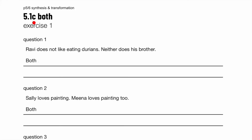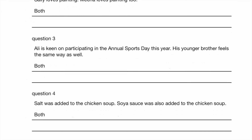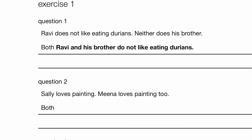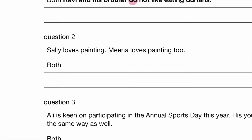Now Part C, a new question type where we use 'both.' Just now we dealt with 'every' and 'each,' which are singular. 'Both' means we are dealing with two people, so that's plural. Ravi does not like eating durians, neither does his brother — so: both Ravi and his brother do not like eating durians. Make sure you use the plural form in present tense. Sally loves painting, Mina loves painting too — so: both Sally and Mina love painting. Dealing with a plural subject, so 'love' comes with no S.